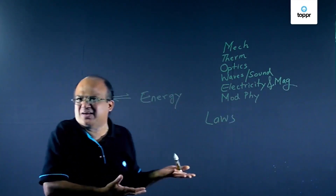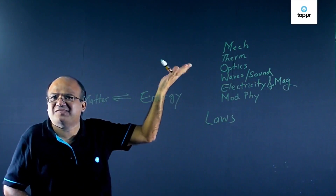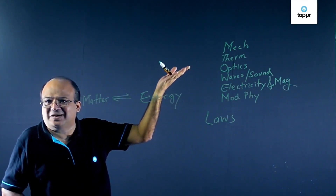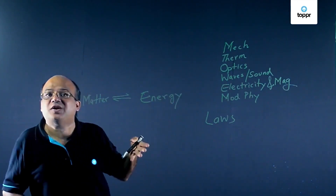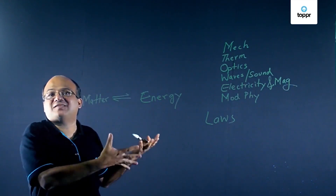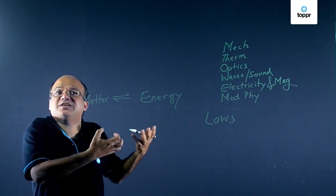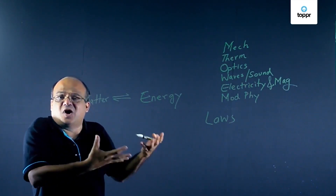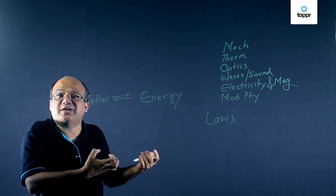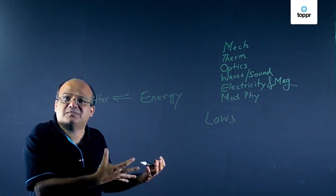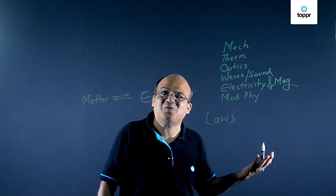To make laws, what do we need? Suppose I want to make laws regarding this room — what is the first thing needed? We need to find out the variables, the physical quantities that we need to make these laws. Suppose you want to study how temperature changes with time. So we need two variables, temperature and time. To make laws, the first thing required is physical quantities.